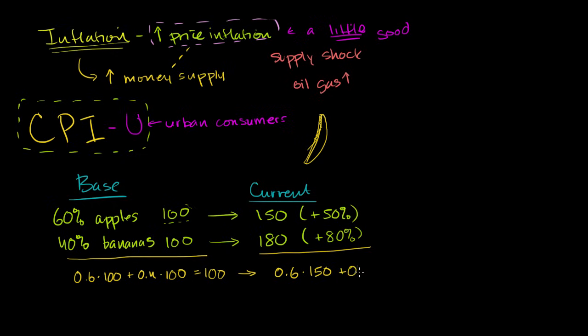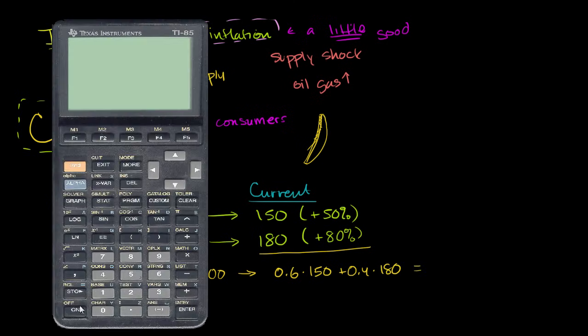and then we'll say plus 0.4 times 180. And that gets us to, let me get my calculator out. So this gets us 0.6 times 150 plus 0.4 times 180. So that gets us to 162.